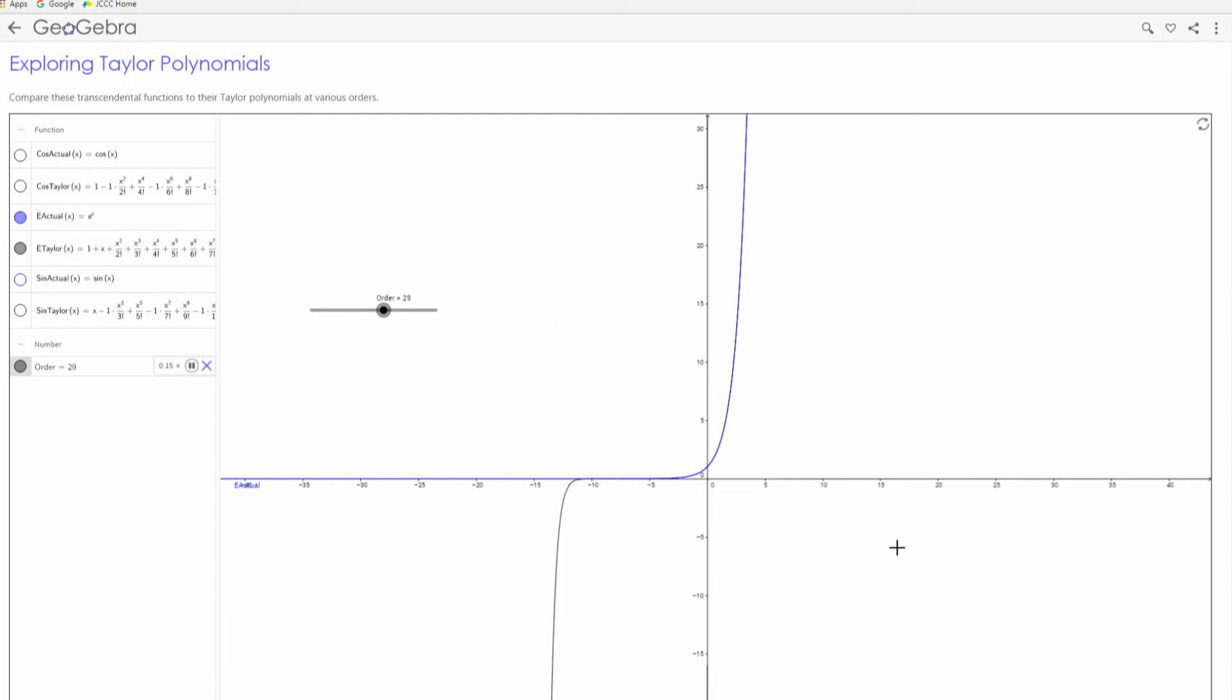And once we can prove that the series and the function are identical, then any time we want, we can replace the function with the series. Because mathematically, they're identical. So we will prove that later on.